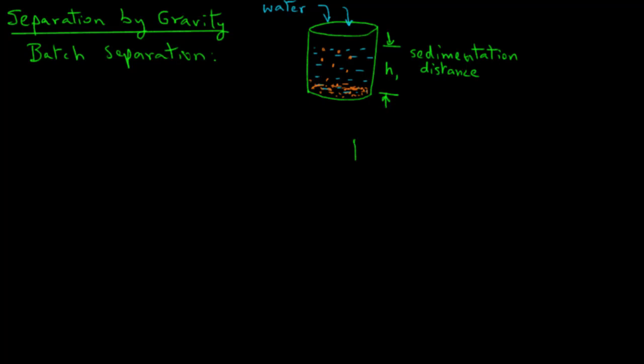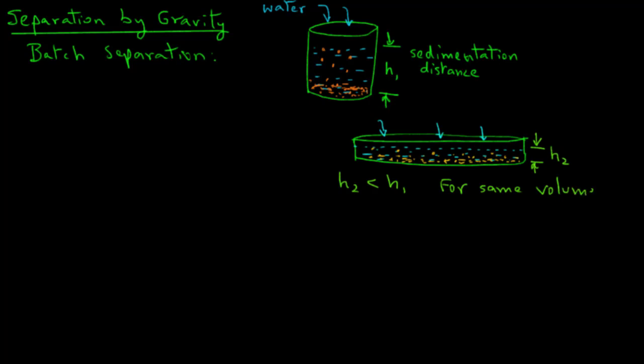Let's say we want to reduce the time to accomplish this separation of sand from water. One of the things we can do is make this vessel of a much larger diameter. We draw this and add water into this second tank. The height of water is h2. We again put sand in it, and the sand particles have a shorter distance to travel to the bottom. In this case, h2 is less than h1. However, for the same amount of volume, we need a much larger area. This second tank occupies a much larger area than the first tank.